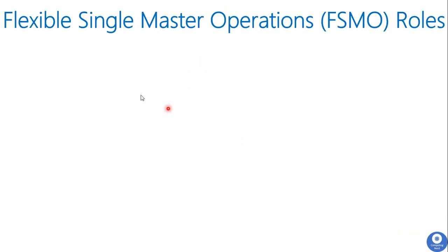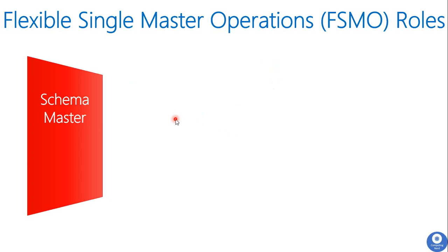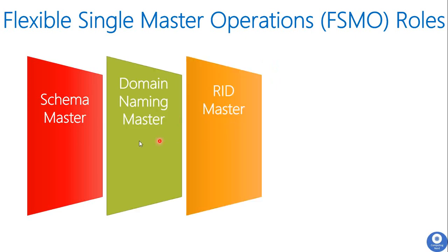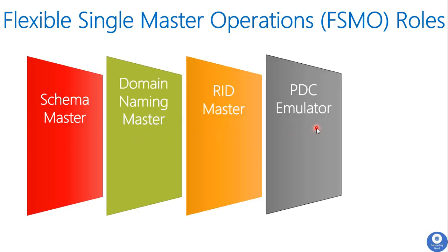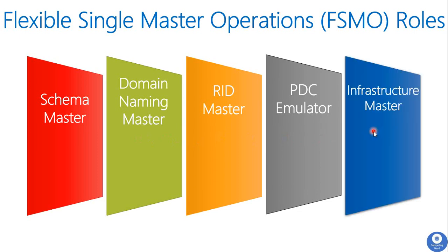Now we are going to see the types of FSMO roles. There are five types: Schema Master, Domain Naming Master, RID Master, PDC Emulator, and Infrastructure Master. These five roles can be installed on a single server or on five different servers, and since they can be transferred or distributed, they are called Flexible Single Master Operation roles — that is, FSMO roles.